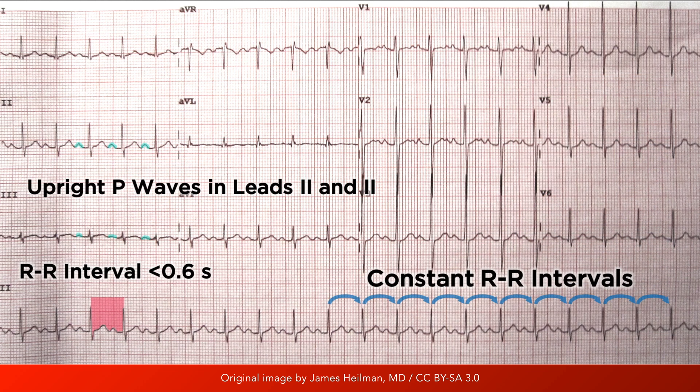So to quickly recap, with sinus tachycardia, an upright P wave of constant morphology precedes every QRS complex, with a regular heart rate faster than 100 beats per minute.